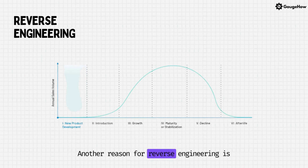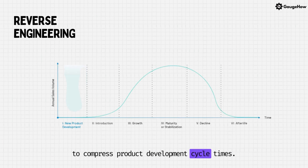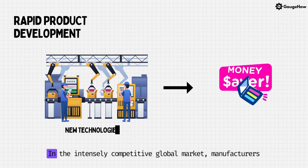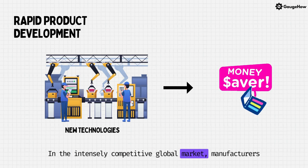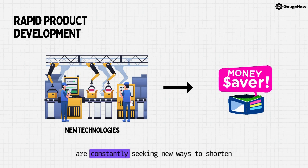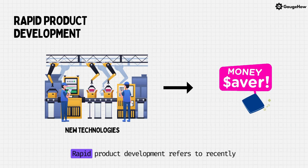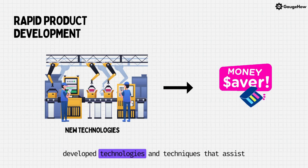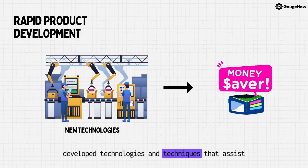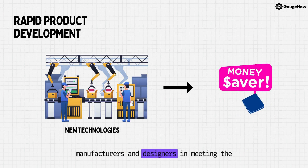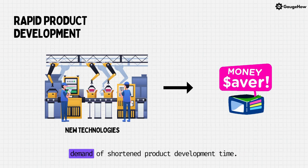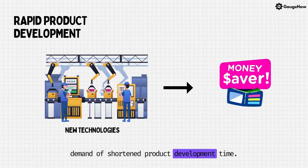Another reason for reverse engineering is to compress product development cycle times. In the intensely competitive global market, manufacturers are constantly seeking new ways to shorten lead times to market a new product. Rapid product development refers to recently developed technologies and techniques that assist manufacturers and designers in meeting the demands of shortened product development time.